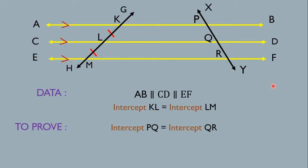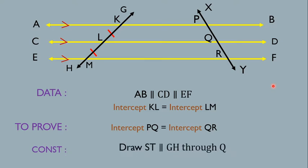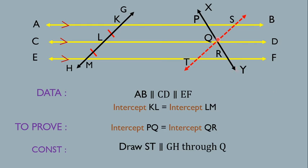This is what the theorem tells us. Now, what might be the construction? Can you tell me what the construction is? Yes, the construction is: we have to draw ST, a line parallel to GH through point Q. So we draw transversal ST parallel to the first transversal GH through point Q. This is the construction.